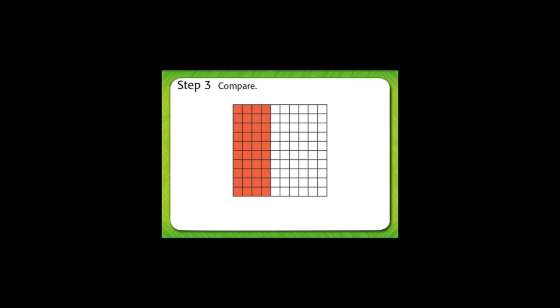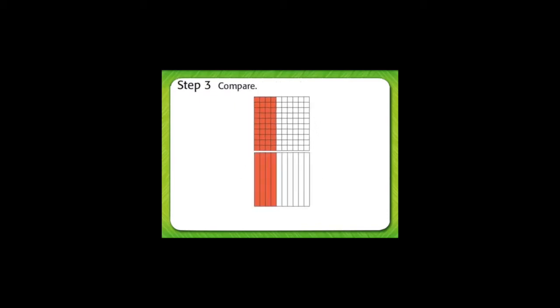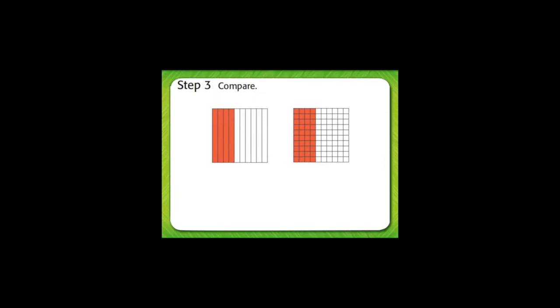Now compare the grids. The same amount is shaded in both grids. Write the fraction for each section. The fraction for the tenths model is four-tenths. The fraction for the hundredths model is forty-hundredths. Finally, write decimals. Four-tenths is written as zero-point-four. Forty-hundredths is written as zero-point-forty.